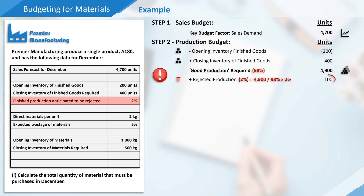In this example our figure for rejected production works out to a whole number of units, but this might not always be the case. If necessary, you need to ensure that you always round up to ensure that enough units are produced. So now we know the total of finished goods that need to be produced: 5,000 units.